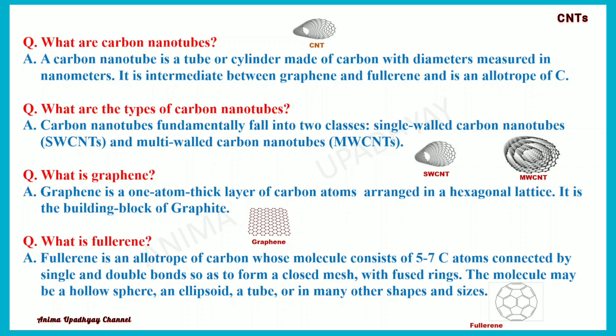What is graphene? Graphene is a one-atom-thick layer of carbon atoms arranged in a hexagonal lattice. It is the building block of graphite. What is fullerene? Fullerene is an allotrope of carbon whose molecule consists of 5 to 7 carbon atoms connected by single and double bonds to form a closed mesh with fused rings. The molecule may be a hollow sphere, an ellipsoid, a tube, or many other shapes. Here is the image of fullerene.